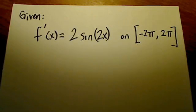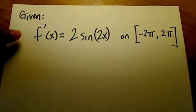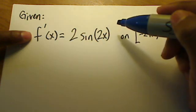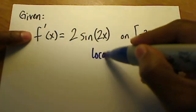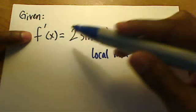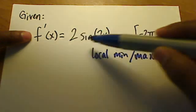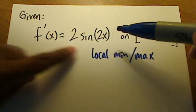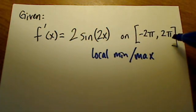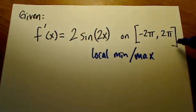In this problem we are asked to find the local max and the local min of an original function, but we weren't told the original function, we were actually only told what the first derivative was. We're asked to find the local min and the local max of the original function, given what the first derivative is, it's 2sin(2x), and we're asked to look for all the values of x in this closed interval between negative 2π and positive 2π.